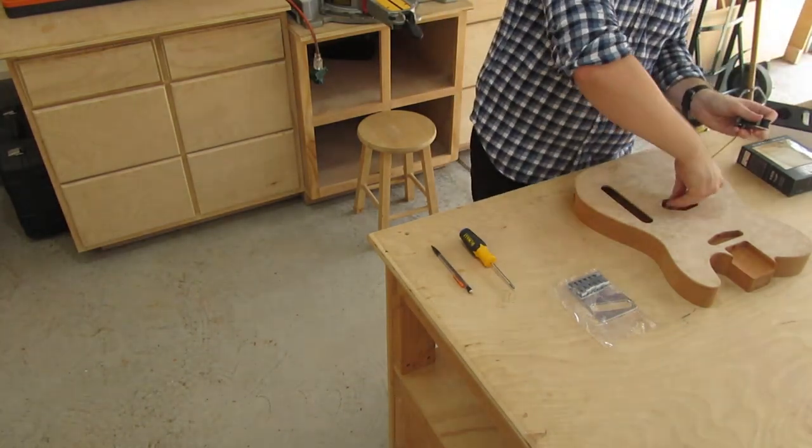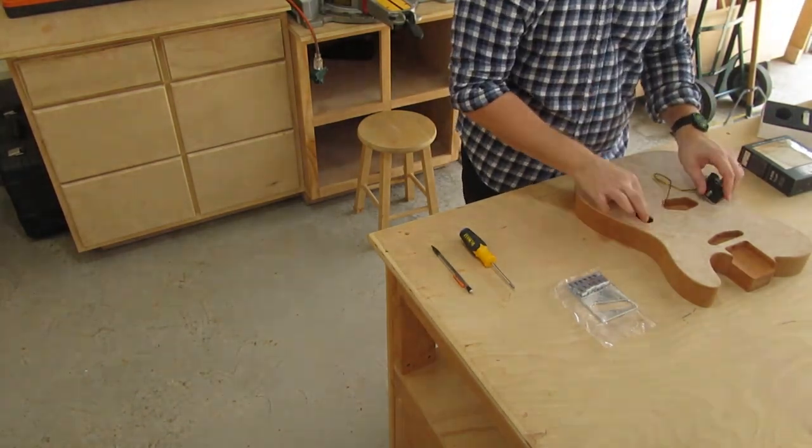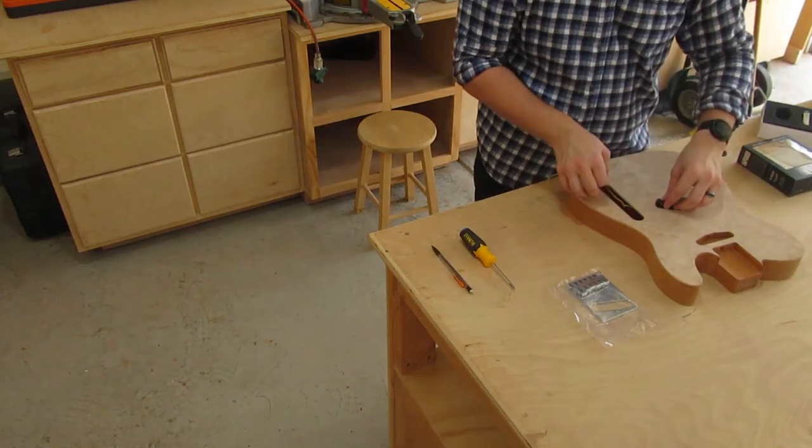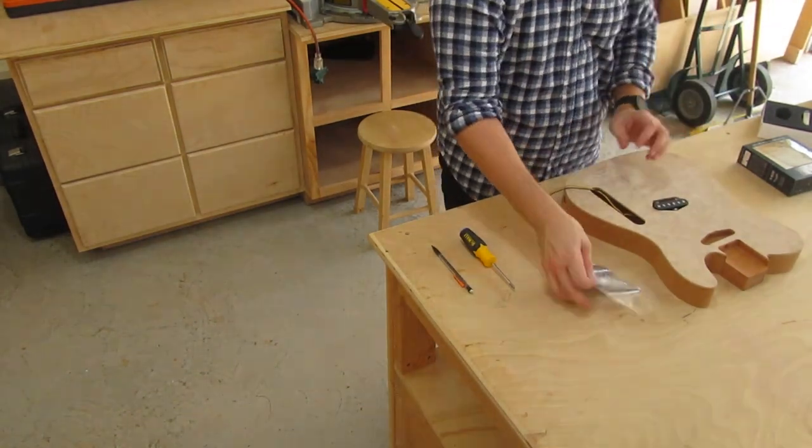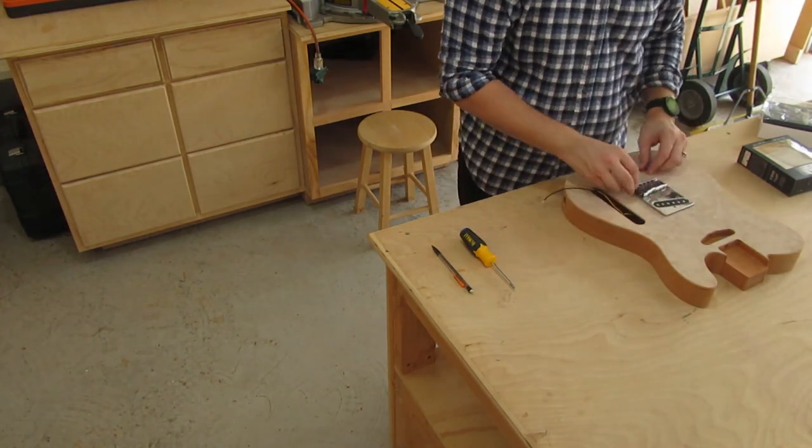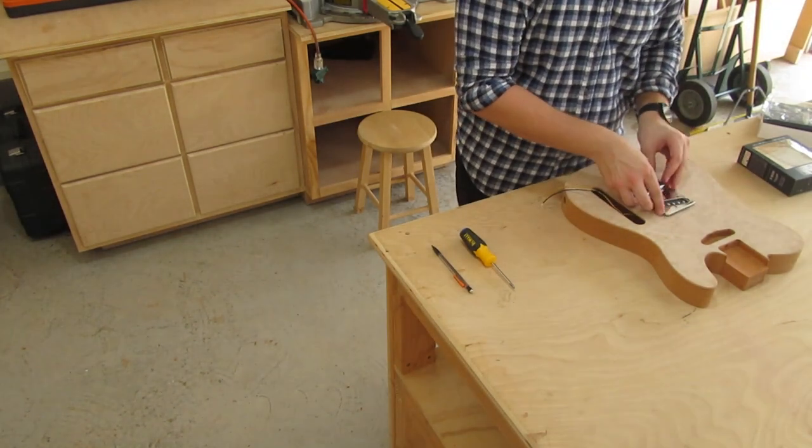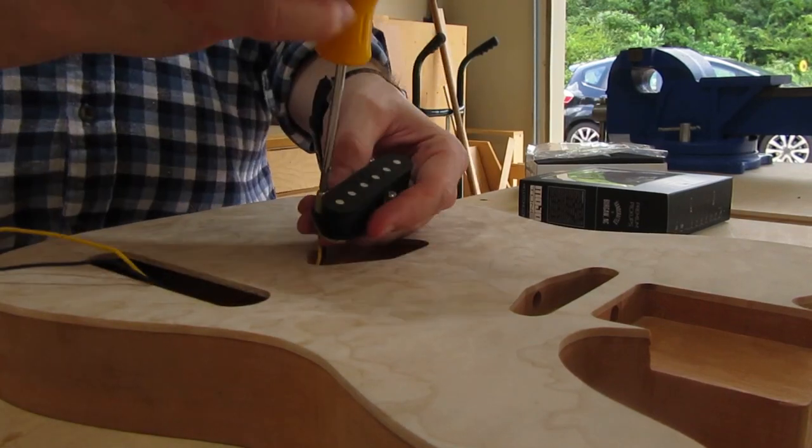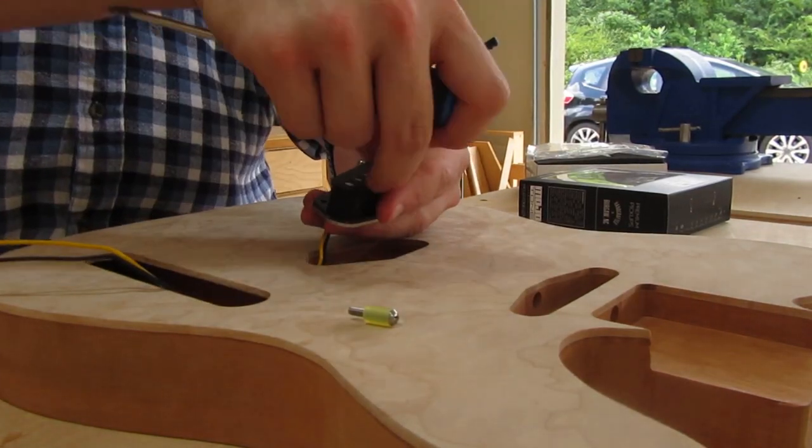Now this is the first part where I start to assemble some of the hardware onto the guitar. Specifically right here, I'm just making sure that everything fits. And then I'm aligning the bridge hardware to the guitar so that I can find out where the holes need to be for the through holes on the strings.